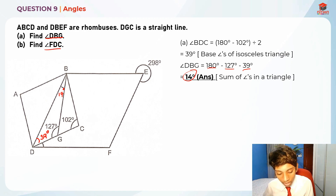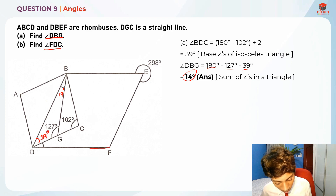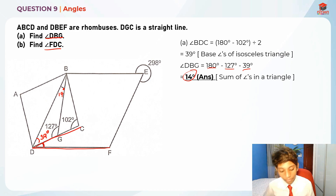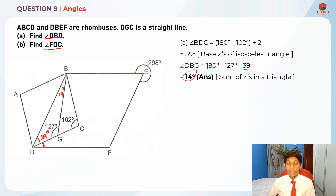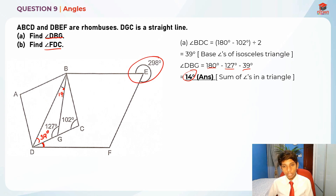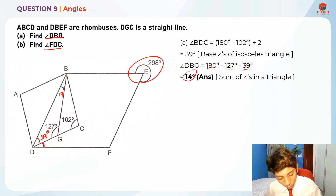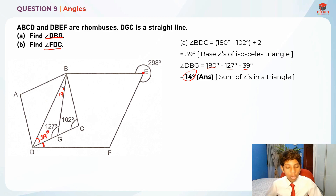For the next part, they are asking us to find angle FDC. So where is FDC? Here is angle FDC. Let's take a look at how we're going to find it. This is actually a rhombus and they've given us some information, so let's make use of it. Right off the bat you can tell that this involves angles at a point.